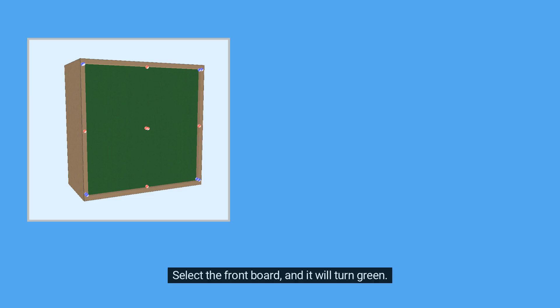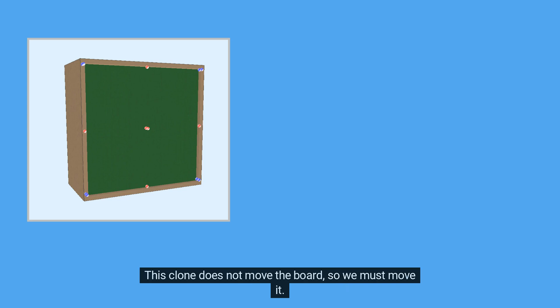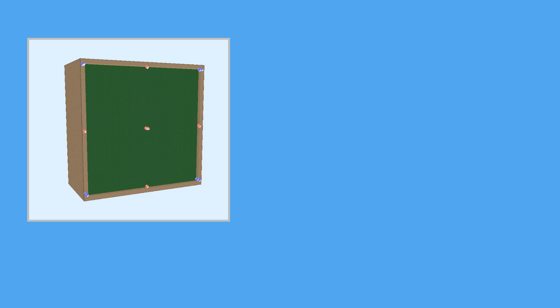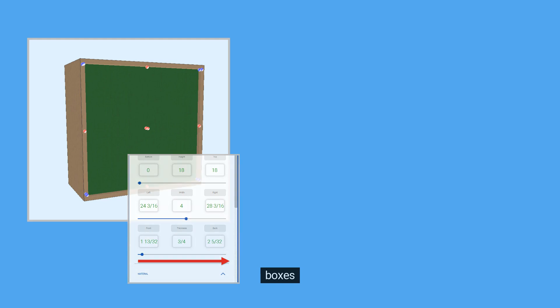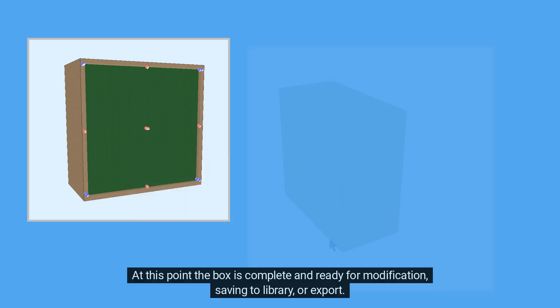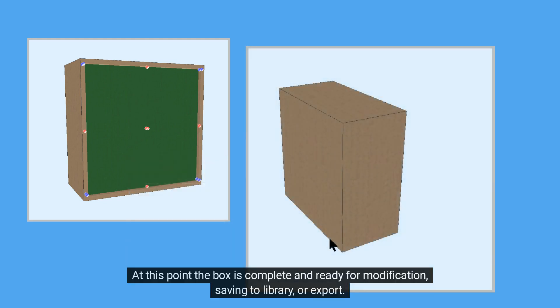Clone the front board. Select the front board and it will turn green. Click the Clone button at the lower right corner of the screen. This clone does not move the board, so we must move it. To move it to the back, use the slider bar on the calculator, below the Front, Depth, and Back text boxes. At this point, the box is complete and ready for modification, saving to library, or export.